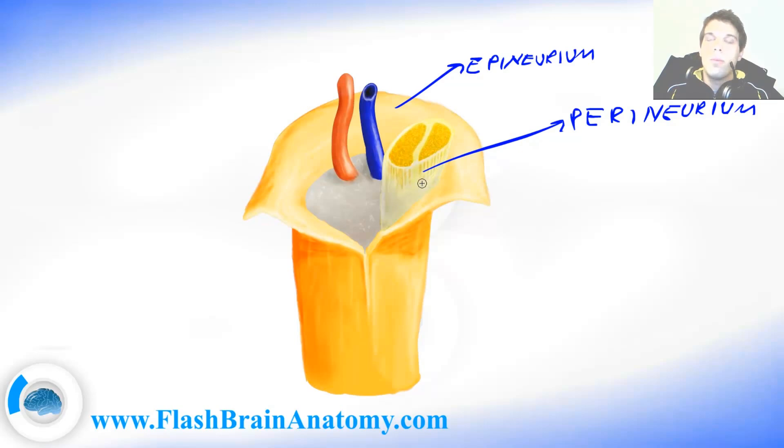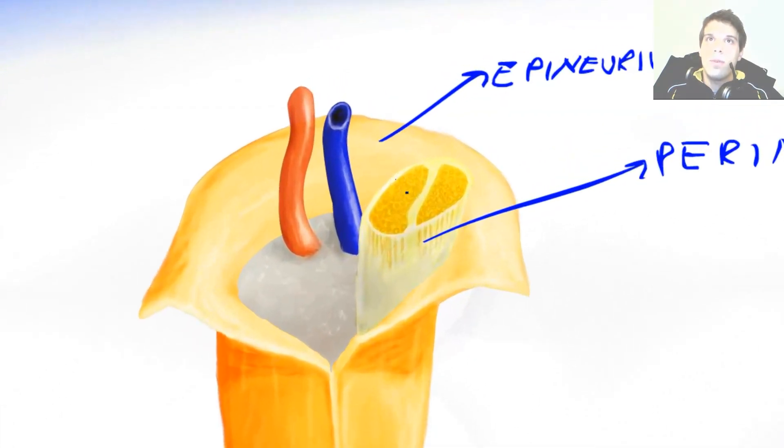Perineurium is transparent membrane and it can be easily separated from the nerve fibers it encloses. It is not mechanically resistant as the epineurium.